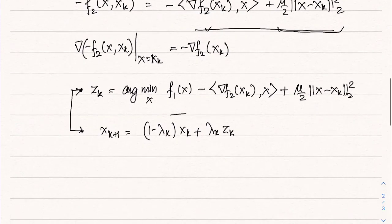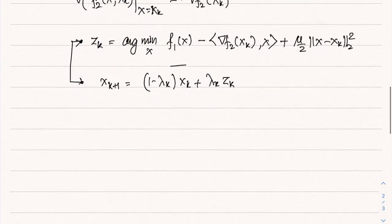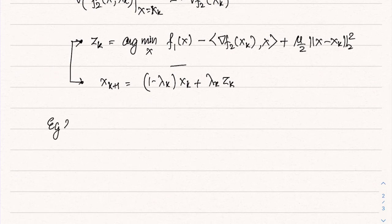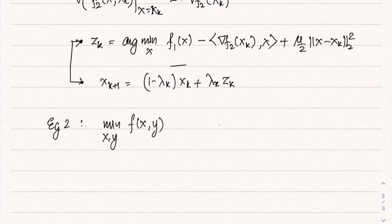Let's look at another example: minimizing f(x, y) where f is block-convex — convex in x given y, and convex in y given x. We have already seen block-convexity in the context of alternating minimization, and SCA is also applicable to this case.